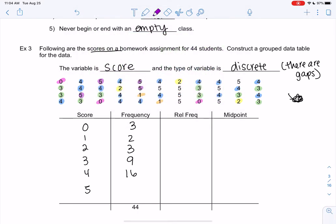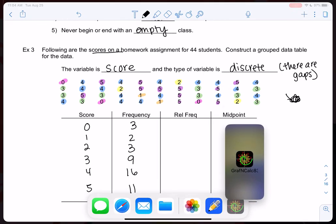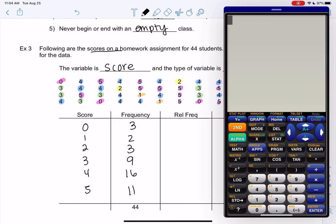So 5s. 1, 2, 3, 4, 5, 6, 7, 8, 9, 10, 11. Cool. And then let's just add them up and make sure they add up to the 44 students. Perfect. So it looks like we got all 44.